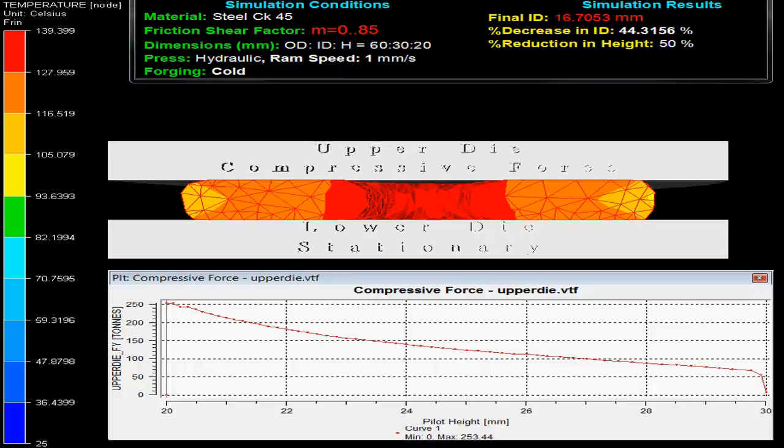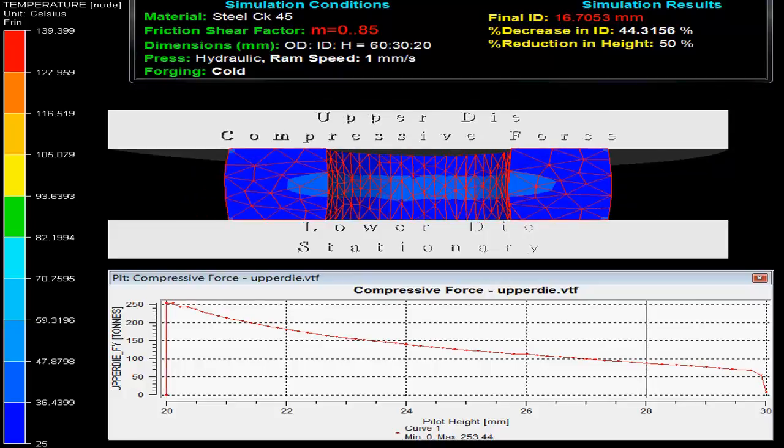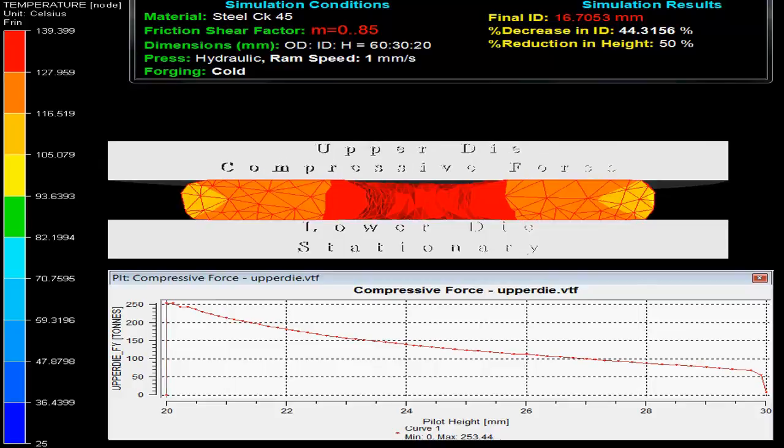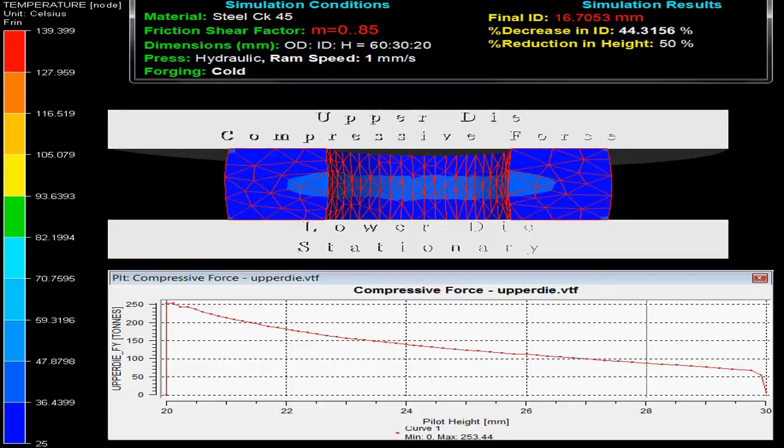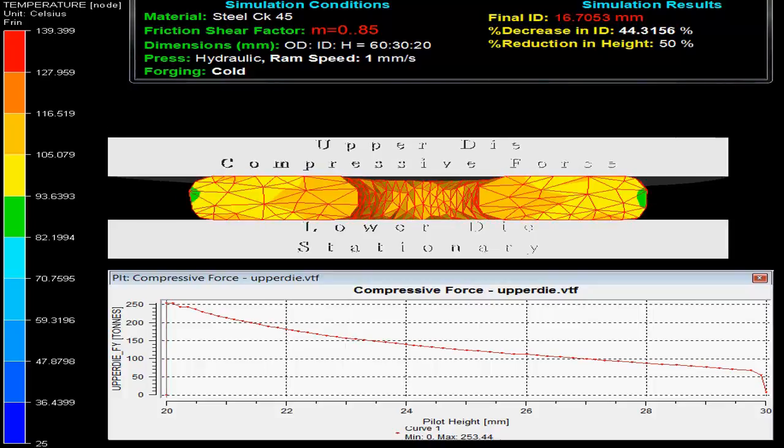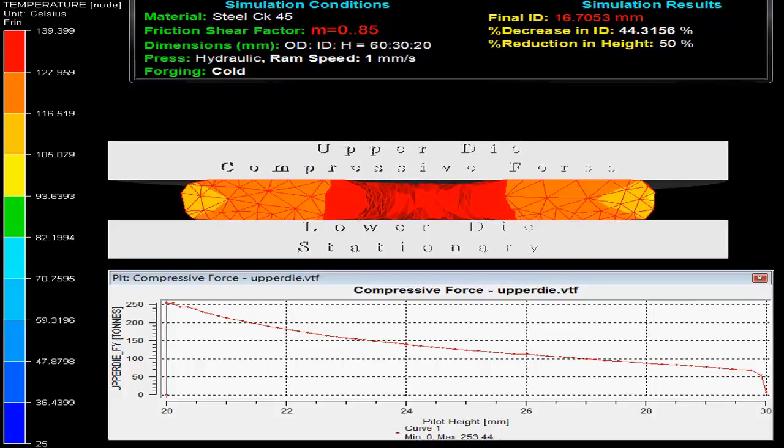The press uses hydraulic ram with speed of 1 mm per second; forging is done cold. On the top right side, simulation results show the final inner diameter is 16.7 mm with decrease in inner diameter by 44.3% on 50% reduction in height.